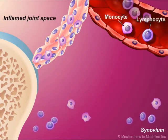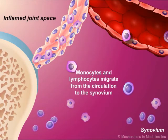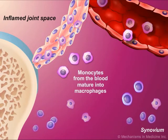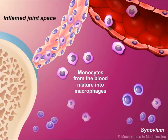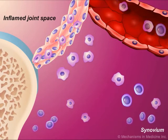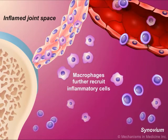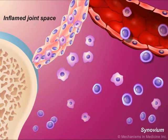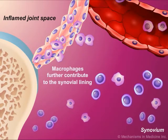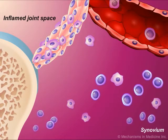The synovium of an RA-affected joint is typified by the accumulation of characteristic inflammatory mediators. Monocytes and lymphocytes leave the circulation and migrate to the synovium. As the monocytes mature, the number of macrophages in the synovium increases. Some macrophages remain in the synovium, further recruiting inflammatory cells. Others contribute to the hyperplastic synovial lining by joining the population of macrophage-like and fibroblast-like synoviocytes.